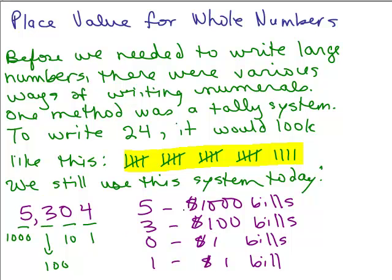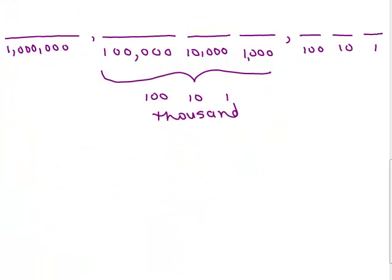So here's how the place value system works. I've gone up to the millions place. Starting from the right, there's the ones, the tens, the hundreds, the thousands, the ten-thousands, the hundred-thousands, the one-millions. If I kept going to the left, there would be the ten-millions, the hundred-millions, et cetera.